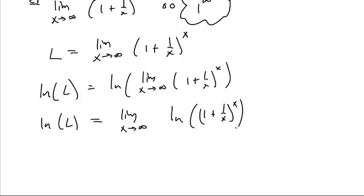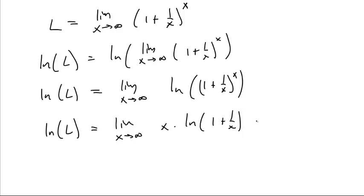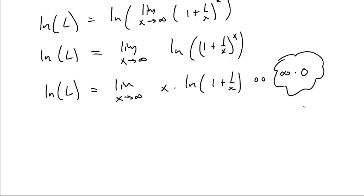Why did we get natural logs involved in the first place? Because when you have an exponent inside a natural log, you can pull it out. So the natural log of L is the limit as x goes to infinity of x times the natural log of one plus one over x. What's inside the parentheses is going to one, and the natural log of one is zero — so this is an infinity times zero form.